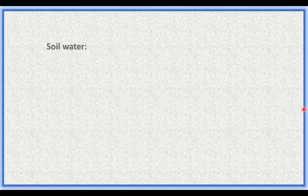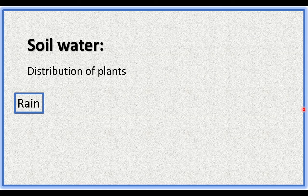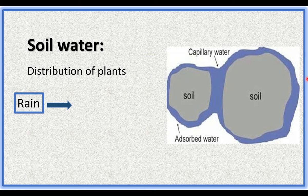Soil water is the most important factor that determines the distribution of plants. Rain is the source of all water. Rainwater flows on the earth's surface due to gravity, moves inside, and stays between soil particles. Some water is adsorbed on the surface of soil particles — this is called combined water or adsorbed water. This water is not available for plants because the force between water and soil particles prevents roots from absorbing it.